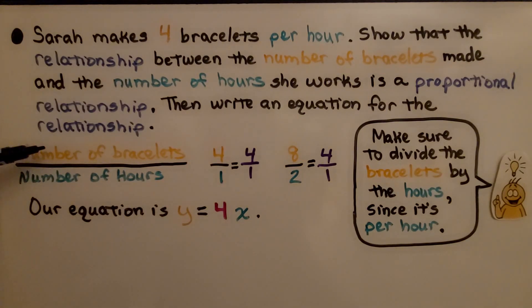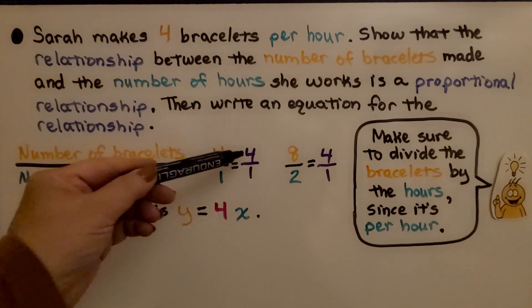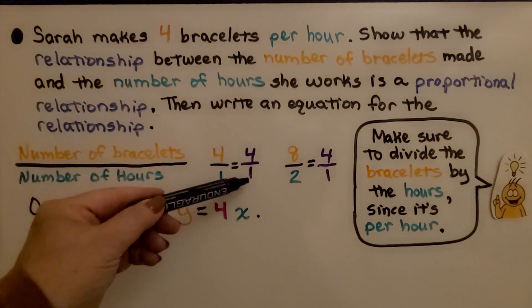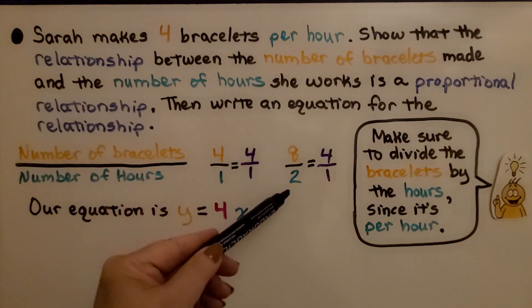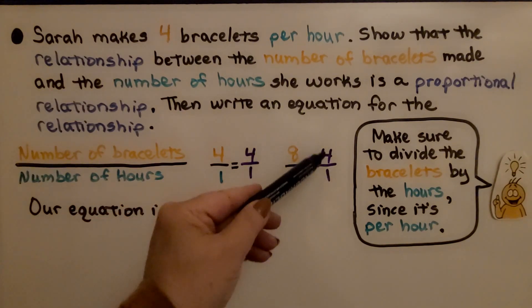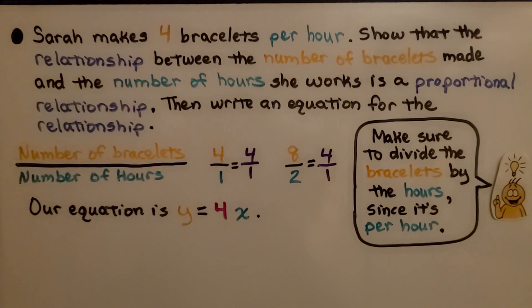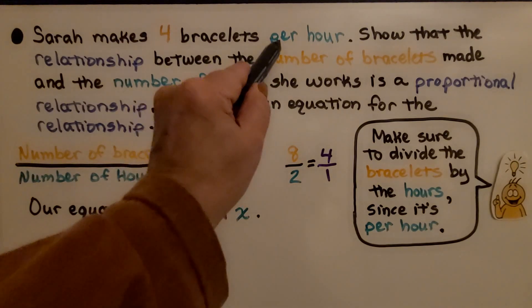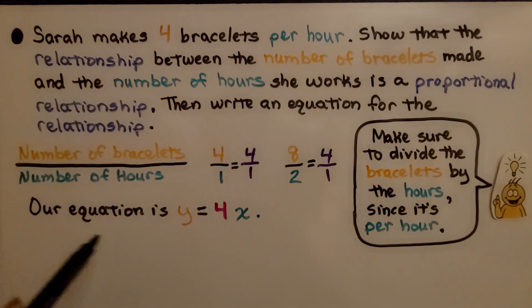So we're going to write the number of bracelets over the number of hours and we've got 4 to 1 as our ratio. That means if she makes 8 bracelets in 2 hours, we still have a 4 to 1 ratio. We make sure to divide the bracelets by the hours since it's per hour.